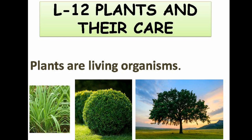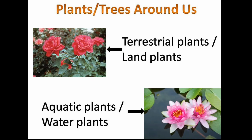Plants are really important for our planet Earth and for all living things. Plants absorb carbon dioxide and release oxygen from the leaves, which humans and other animals need to breathe. Plants provide us food, shelter, medicine, and clothing. We have terrestrial plants or land plants, and we have aquatic plants or water plants.